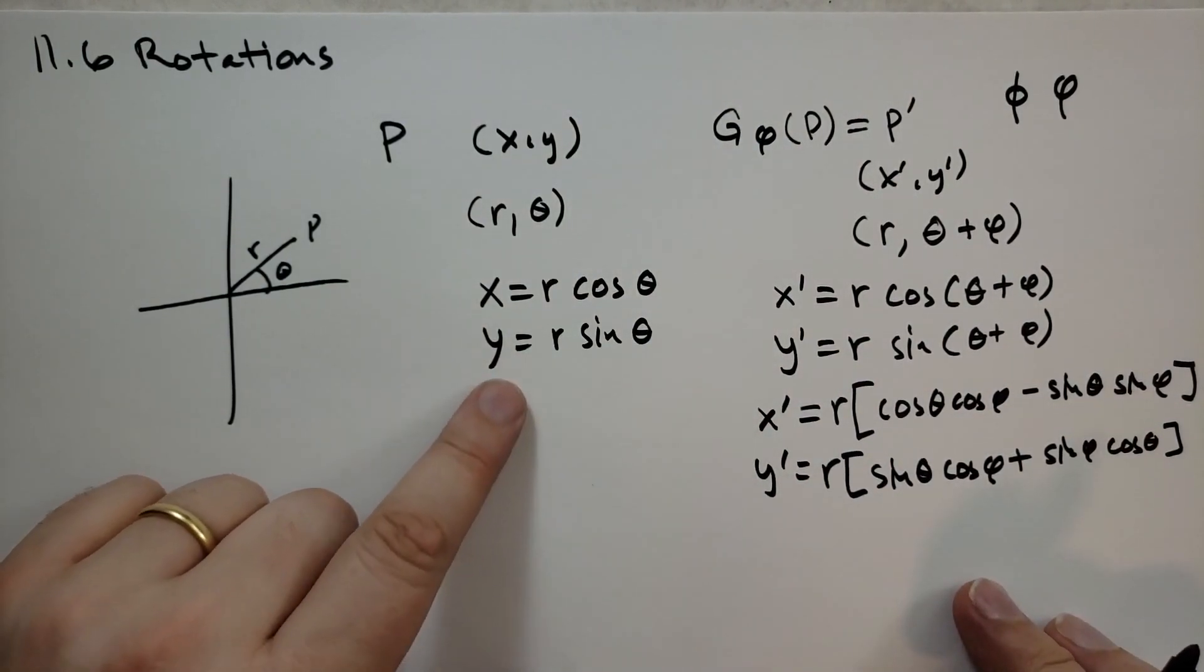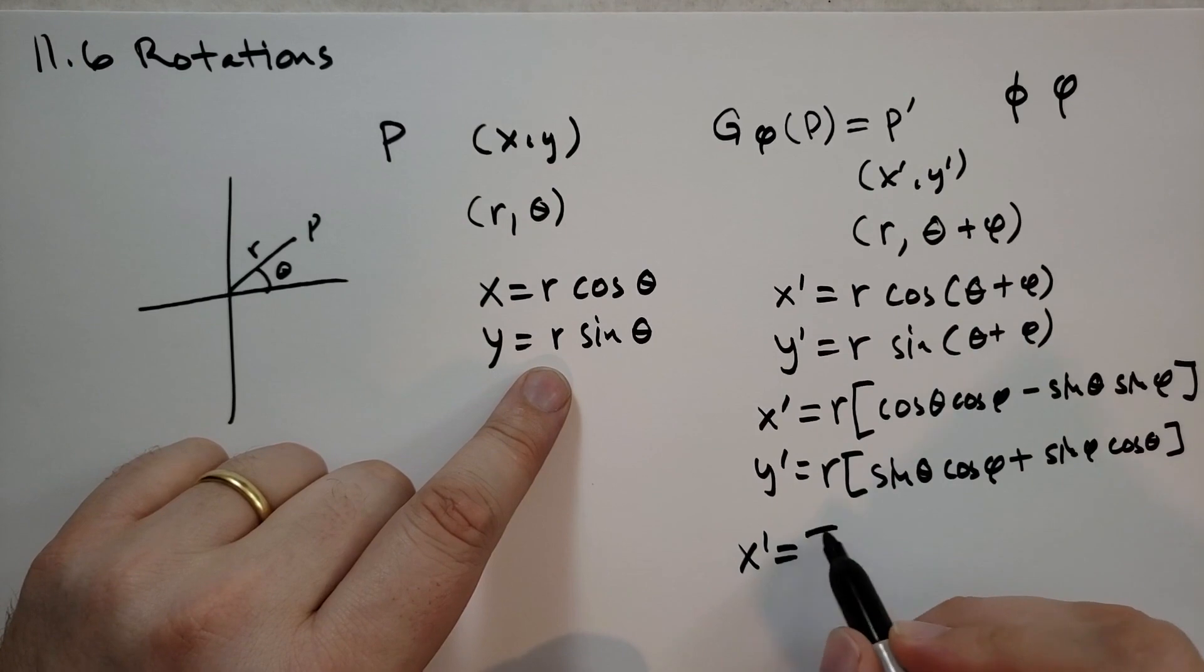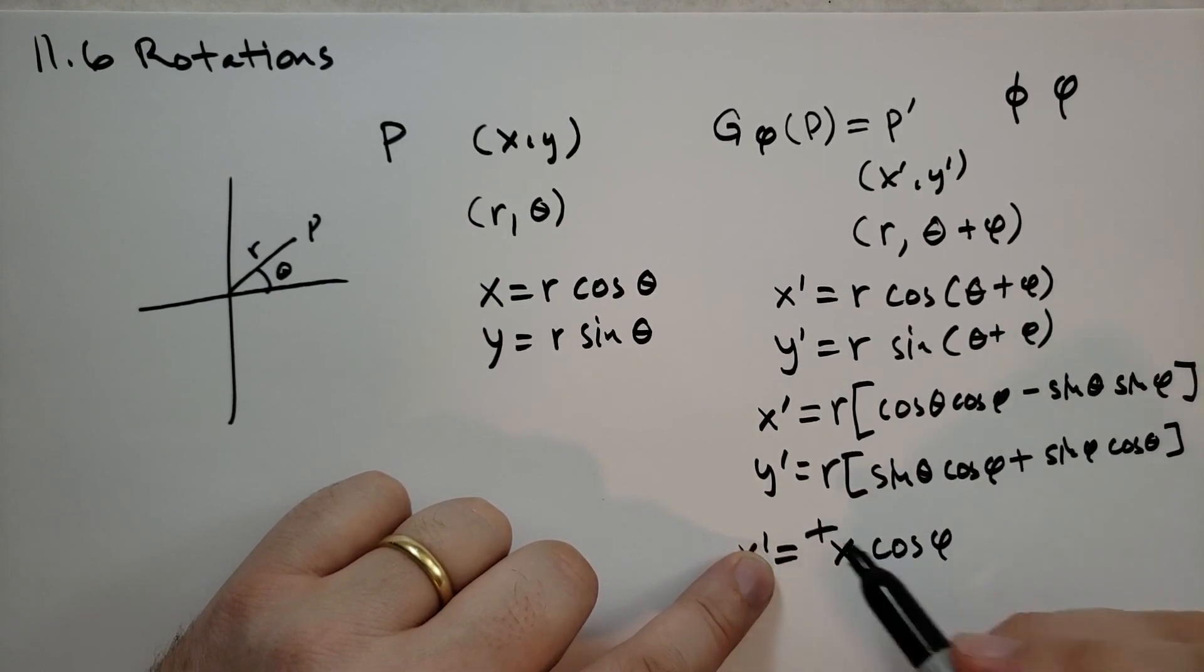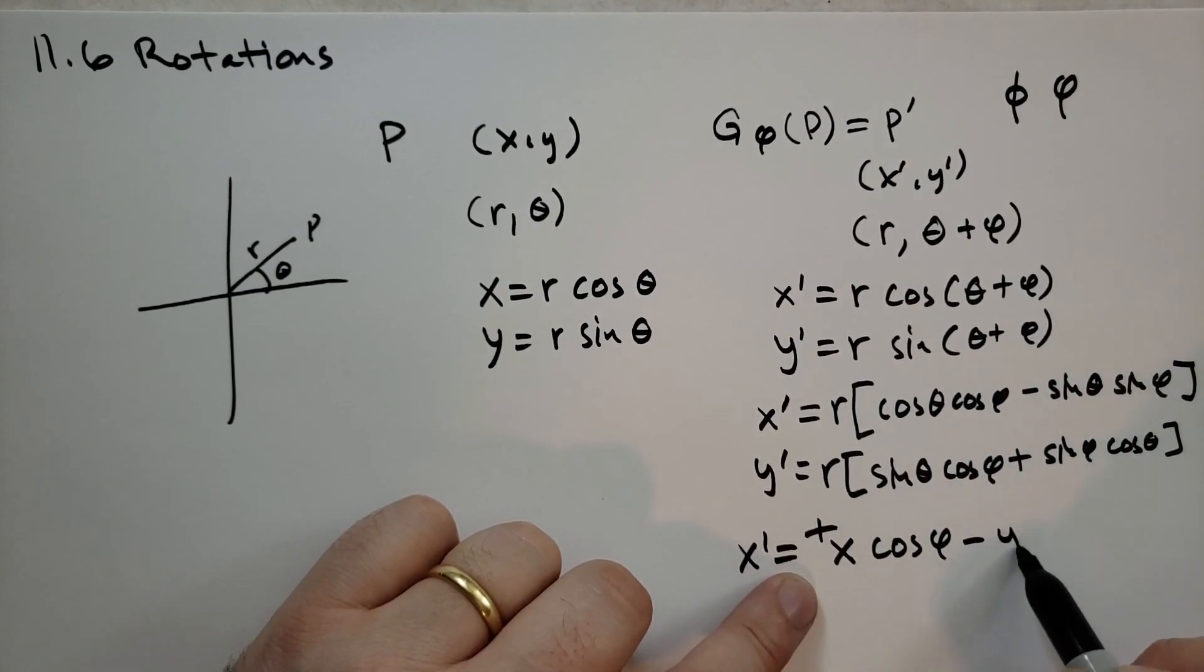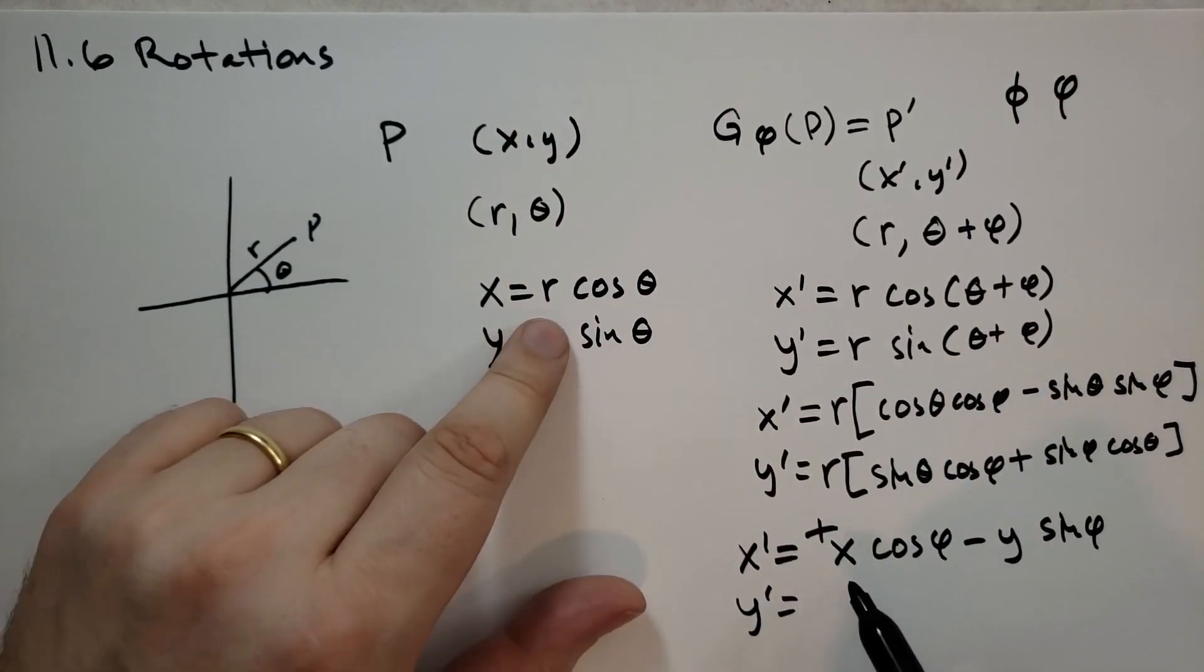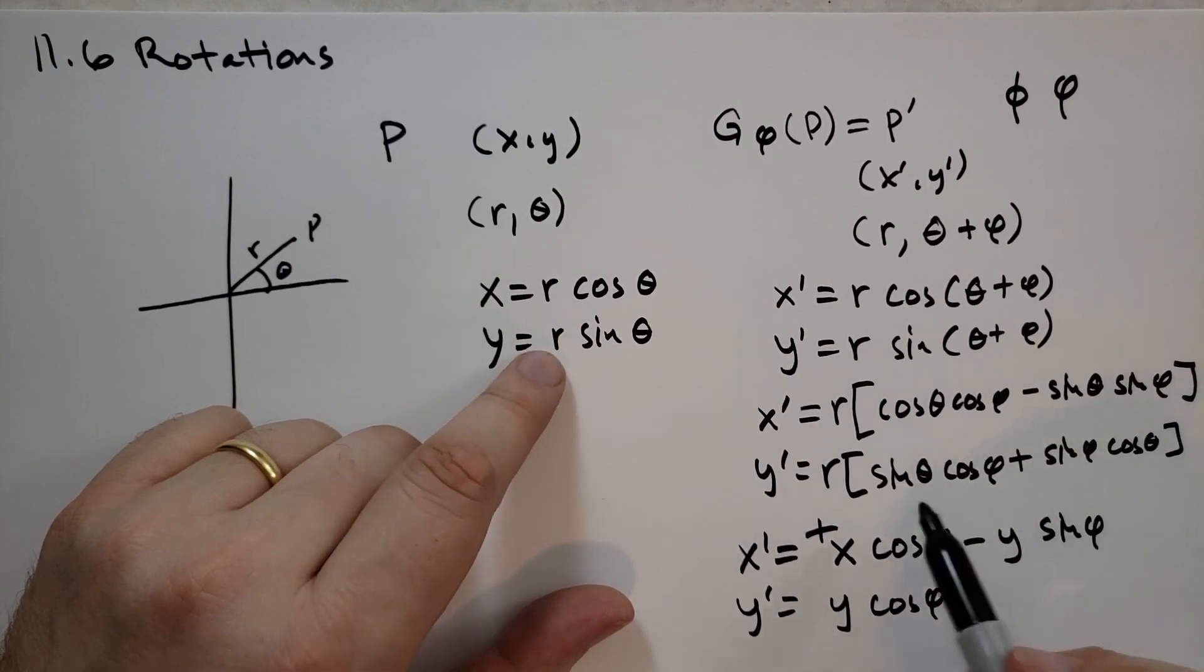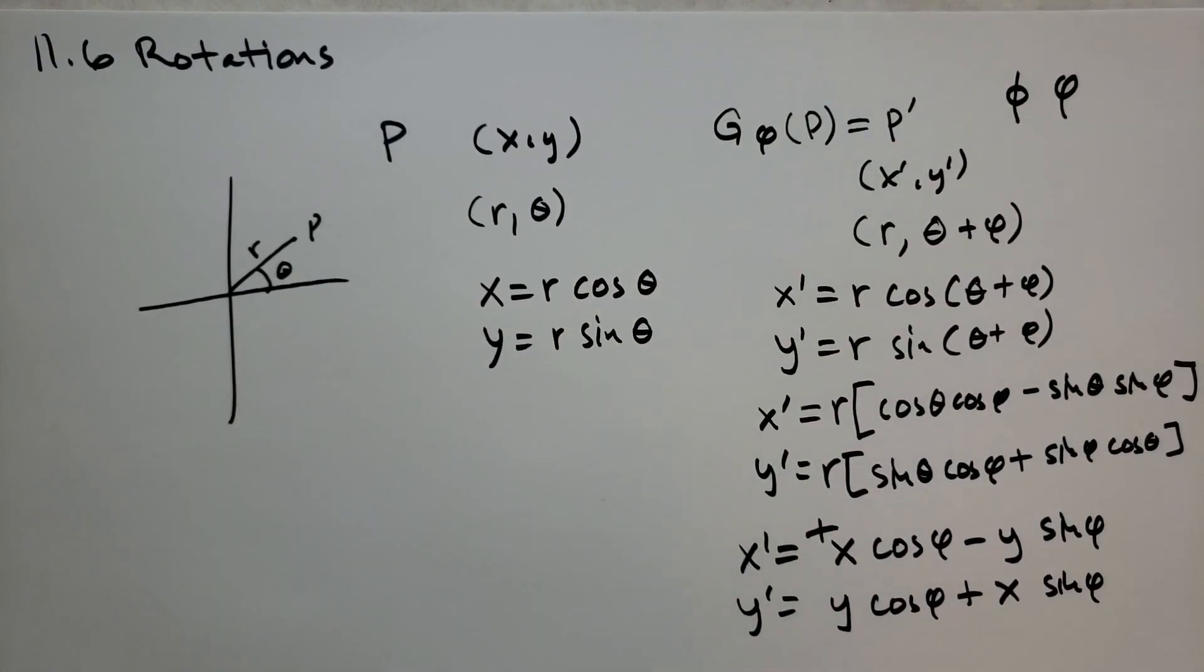Now what? Well, r cos theta is x, r sine theta is y. So x prime is equal to r cos theta, which is x, x times cos phi. I'm going to add a plus here, because I didn't mean to put that mark down. And then r sine theta, so minus y times sine phi. And the y prime is equal to, we have an r sine theta, so it's y times cos phi, plus, there's r times cos theta, so that's an x sine phi.